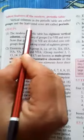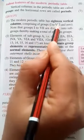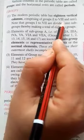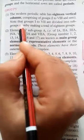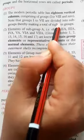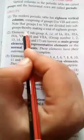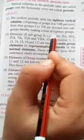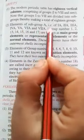Salient features of the modern periodic table: The vertical columns in the periodic table are called groups and the horizontal rows are called periods. The modern periodic table has 18 vertical columns. In comparison of the groups, first to eighth and zero, note that groups first to seven are divided into subgroups, thereby making a total of 18 groups.